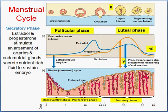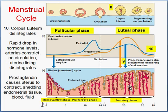In the secretory phase, estradiol and progesterone stimulate the uterine lining to sustain the embryo. If implantation doesn't occur, the lining sheds off. Prostaglandin causes the uterus to contract, leading to shedding of endometrial tissue through blood and fluid — and that is the end of the menstrual cycle, predominantly in human beings.